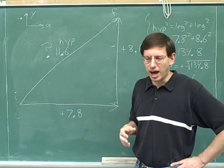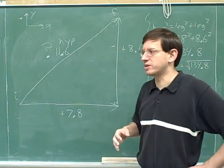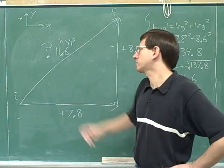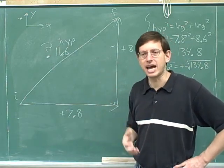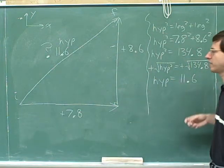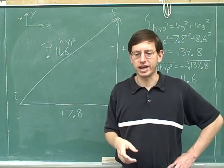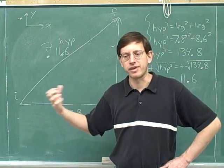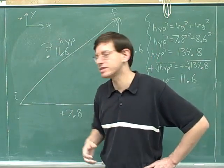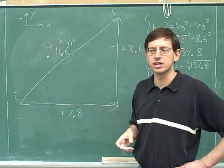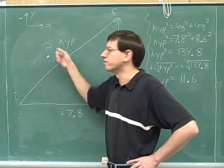Notice that you can't just take the two individual magnitudes and add them. The first leg of our journey was five meters long and the second leg was seven meters long, but five plus seven is 12, not 11.6. Since those two vectors were not parallel, we can't just add those numbers together. Instead, we broke them into components — it's very easy to add two horizontal components or two vertical components. That gave us the horizontal and vertical components of the overall vector, and then we used trigonometry to go back to the magnitude of the overall vector.